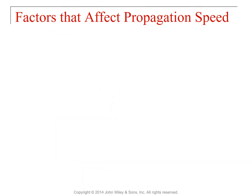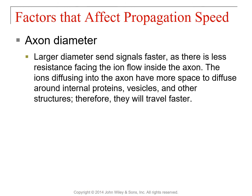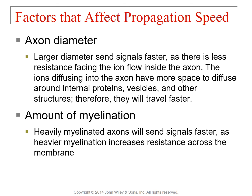What factors affect how fast an action potential propagates down an axon? First: axon diameter. Larger diameters send signals faster because there's more space for ions to diffuse around internal proteins, vesicles, and other structures — it's easier to move through a less crowded room, and easier for ions to move through a less crowded axoplasm. A larger axon diameter means faster propagation speed. Second: amount of myelination. Heavily myelinated axons send signals faster because they more effectively limit ions from leaking out across the membrane.